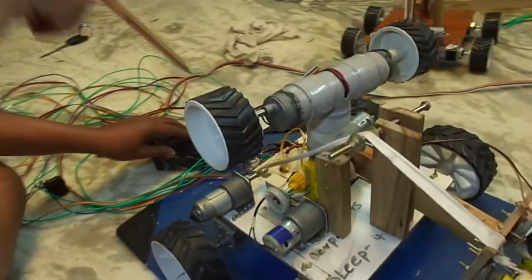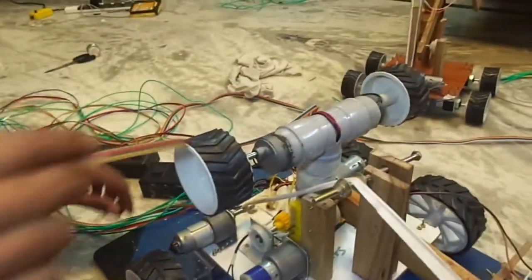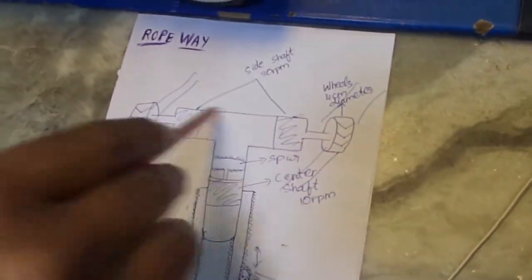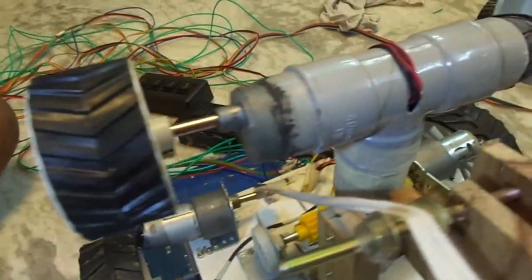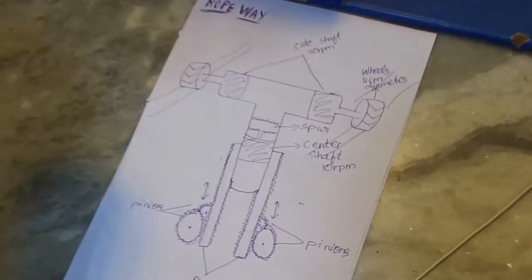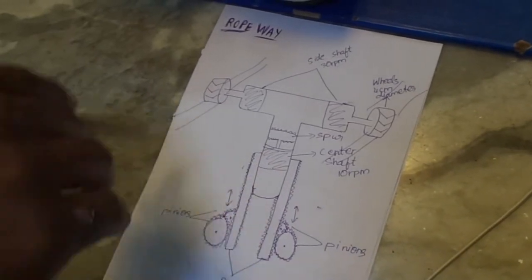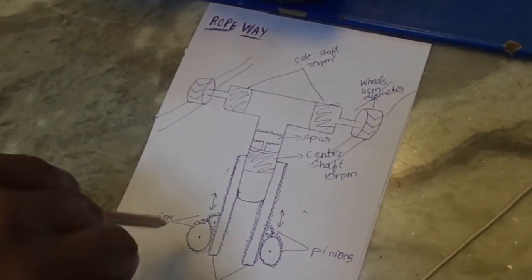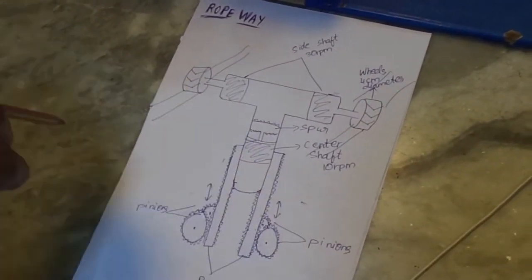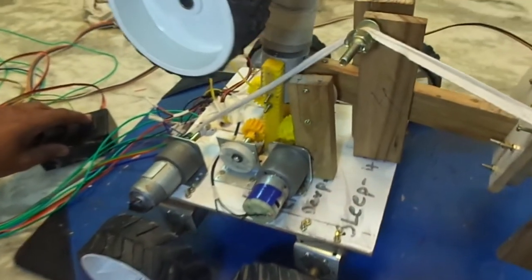This is the ropeway mechanism exactly what I drawn. These two wheels are connected to the side shaft motor of 30 rpm. We chose 30 rpm because it has high torque, since this bot is a little bit heavy and has to pull the weight. So we use 30 rpm to get maximum torque. This is the linear motion of the ropeway mechanism.